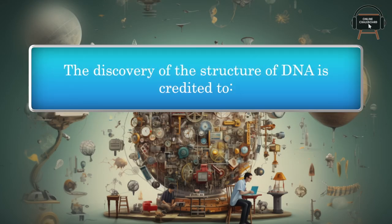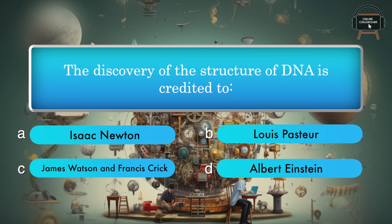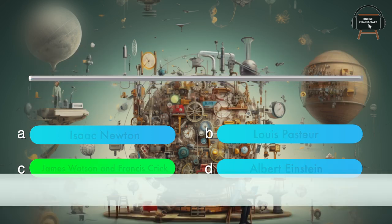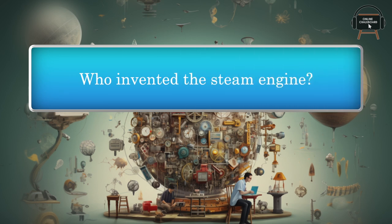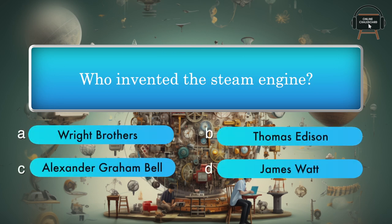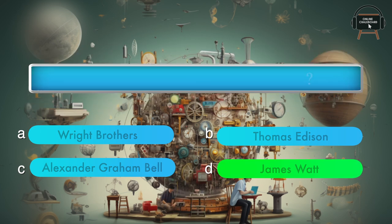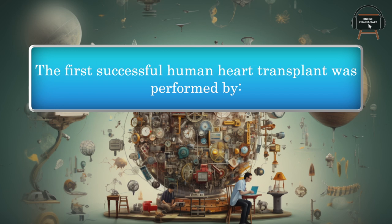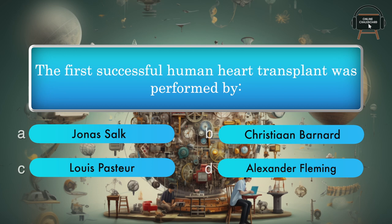The discovery of the structure of DNA is credited to: Isaac Newton, Louis Pasteur, James Watson and Francis Crick, Albert Einstein. Answer: James Watson and Francis Crick. Who invented the steam engine? Wright Brothers, Thomas Edison, Alexander Graham Bell, James Watt. Answer: James Watt.